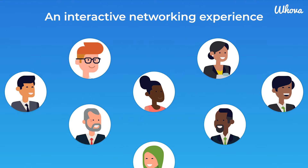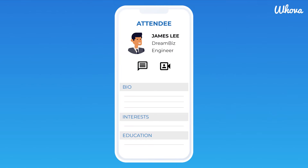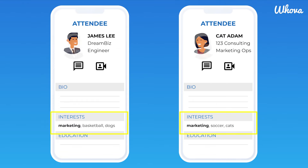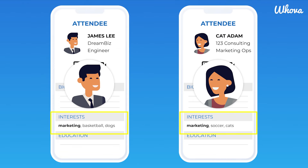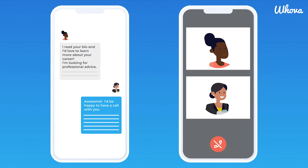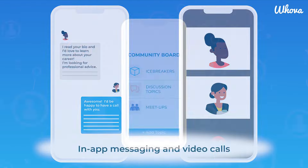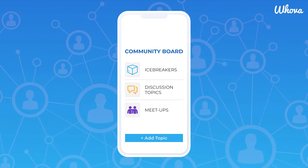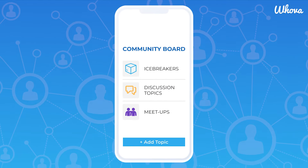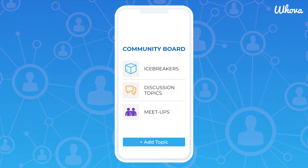When it comes to connecting your attendees, Whova provides an interactive networking experience. Each attendee can fill out their profile, and Whova will recommend attendees to each other based on common details, so they can plan who to meet. When they want to reach out, they can use our one-on-one messaging and video calling features, all within the app. Attendees can make natural connections through the community board, a feature that's loved by millions of attendees.